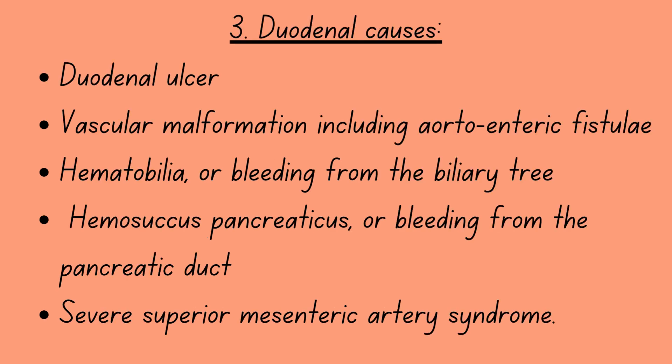Number three: duodenal causes. Duodenal ulcer, vascular malformation including aortoenteric fistulae, hemobilia or bleeding from the biliary tree, hemosuccus pancreaticus or bleeding from the pancreatic duct, and severe superior mesenteric artery syndrome.